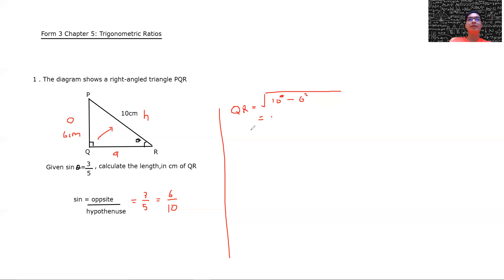Okay, so now we just square it. So it's 10 square equal to 100 and then minus 6 square. 6 square is 36 square root. So 100 minus 36 is 64. And then remember the square root and we get 8. Square root of 64 is 8. So it's 8 cm. So the length of QR is 8 cm.